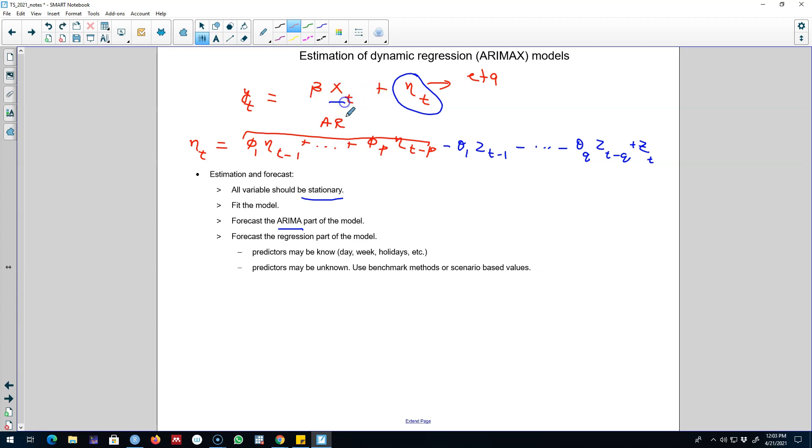In some cases, future values of x-t variables will be known in advance. For example, if we want to include the day of the week, some holidays or special occasions, the values of those x-t variables will be known in advance.